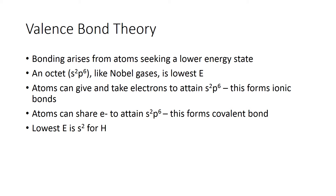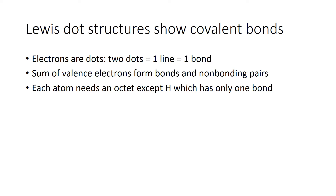The lowest energy for hydrogen is s2, giving it an electron configuration equivalent to helium. For all elements bigger than hydrogen and helium, they all seek the s2p6 arrangement. To show covalent bonds we use Lewis dot structures, which is what we'll use in organic chemistry. We do have a few ionic bonds — for example, between carbon and lithium, carbon gets a negative charge with a non-bonding pair, and lithium gets a positive charge.